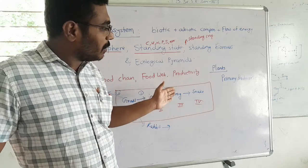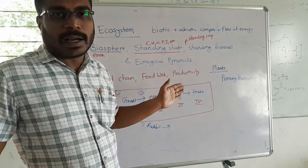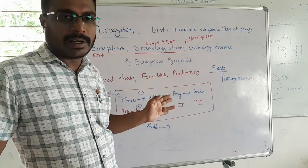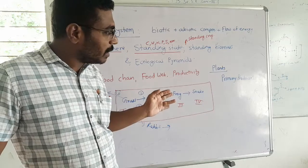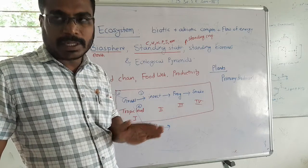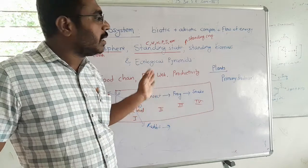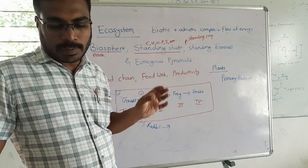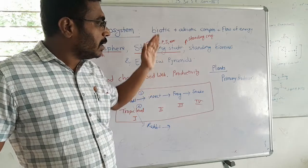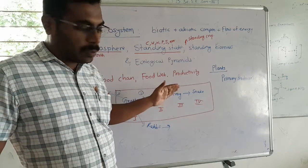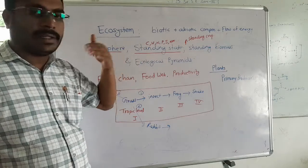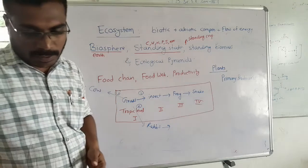Productivity is of two types: primary productivity and secondary productivity. Further subdivisions include gross primary productivity and net primary productivity. These types of productivity will be studied in detail in further progress.